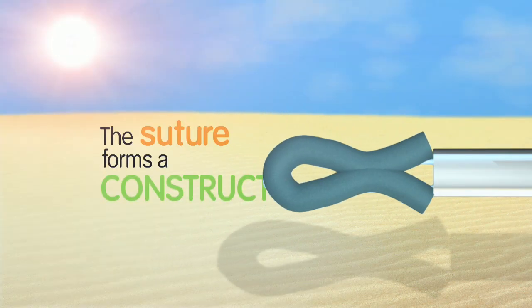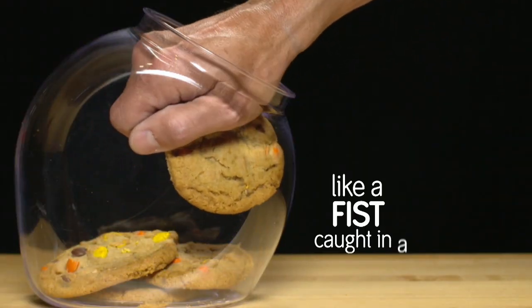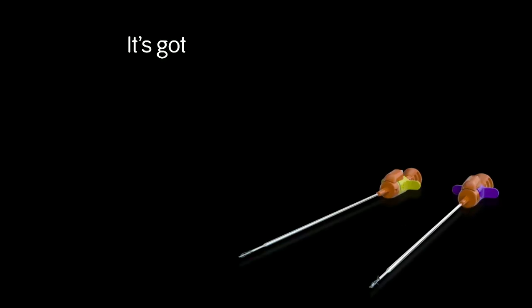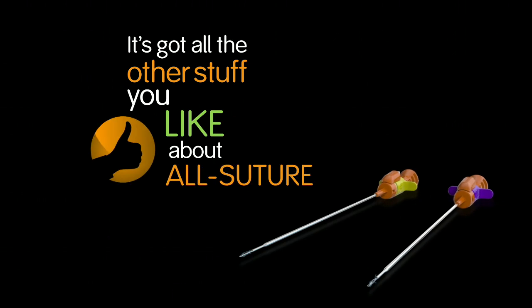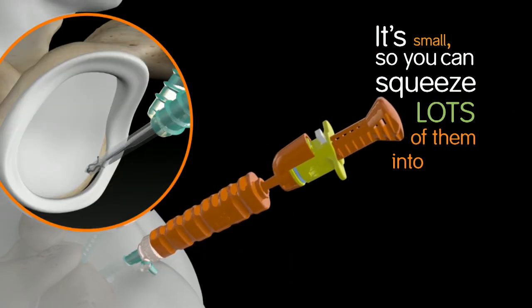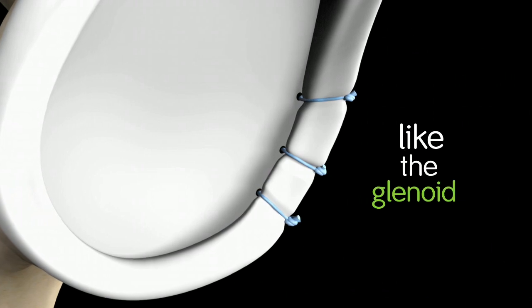The suture forms a construct that's hard to pull out, like a fist caught in a cookie jar. And guess what? It's got all the other stuff you like about all suture anchors. It's small, so you can squeeze lots of them into a tiny space, like the glenoid rim.